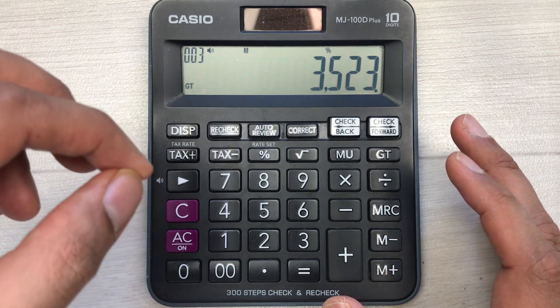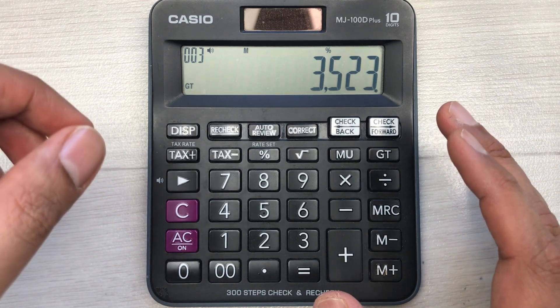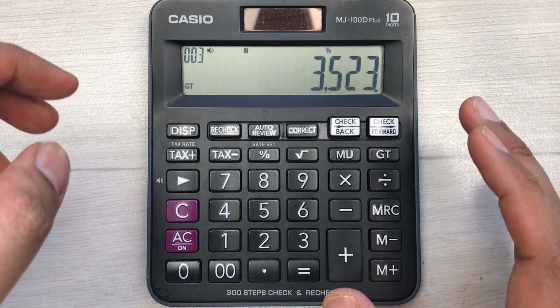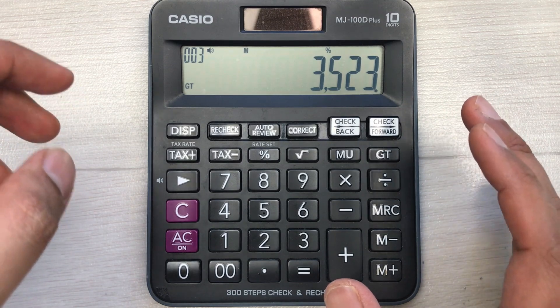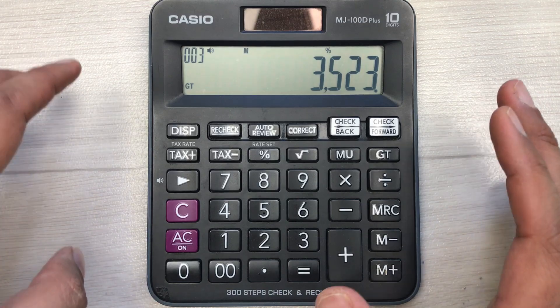After 35% discount, the final amount that I have to pay is 3523. So guys, why did I multiply it with